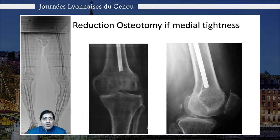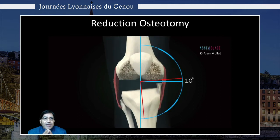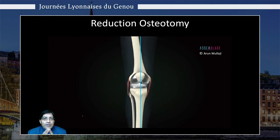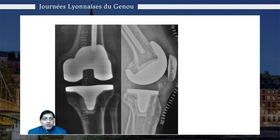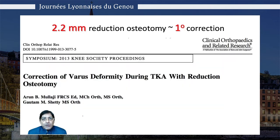When we resected the osteophytes, 59% could be aligned and balanced, and only the remaining 31% needed a reduction osteotomy, as shown in this example where there is extra-articular deformity. We remove the posterior medial flare of the tibia, and that helps to reduce the tenting of the medial collateral ligament. This is the post-operative x-ray showing the effect of the reduction osteotomy and the achievement of alignment and balance — 2 millimeters of bone removal can give you about one degree of correction.